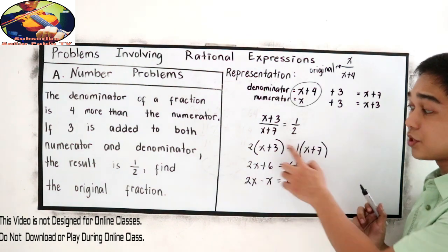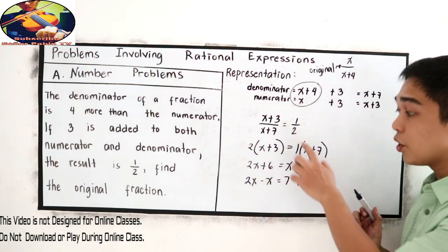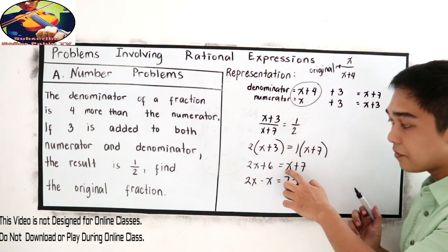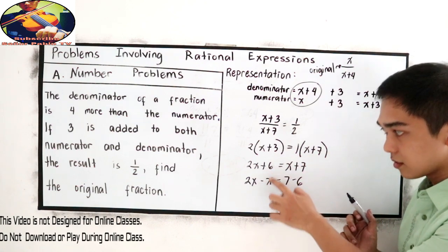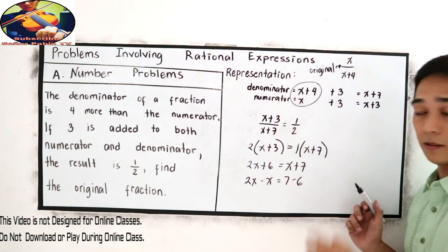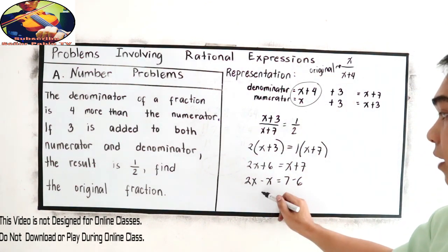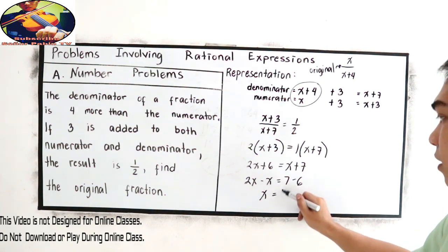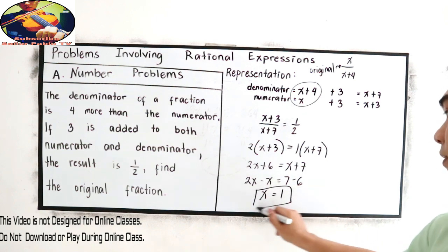Do not forget to change your sign if you're going to move the expression on the left side or on the right side. That's why positive x will become negative x. Positive six will become negative six. 2x minus x will become one x or simply x is equal to seven minus six, positive one. The value of x is positive one. Done.